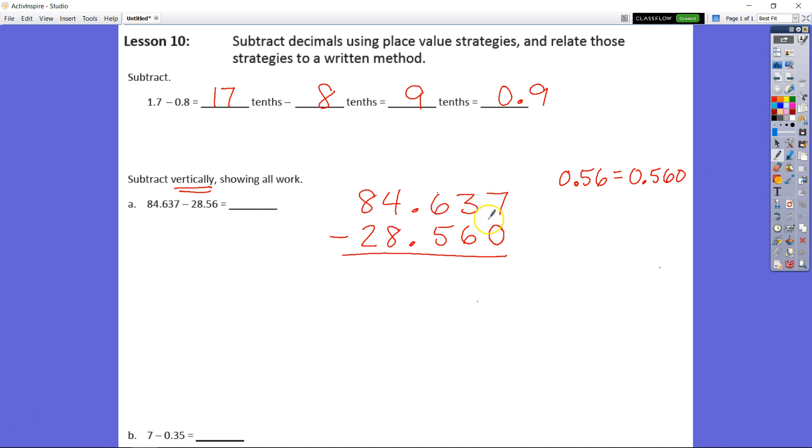Alright so let's do some subtraction here. 7 minus 0 is 7. 3 minus 6 we can't do that so we have to look and say well we have 3 hundredths and we're trying to take away 6 hundredths. We know we need to regroup 1 of our tenths.